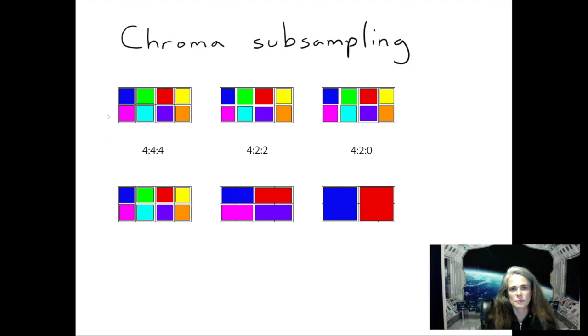The way chroma subsampling works is really cool. Commonly you'll have two rows of four pixels each and that will be one block of pixels, and then you'll decide what happens to the color data in that block and then you repeat it for every block.